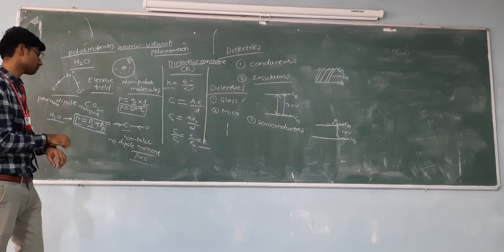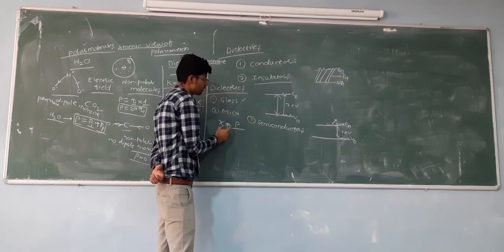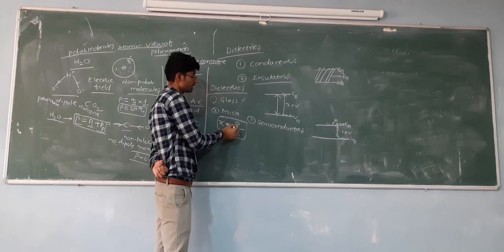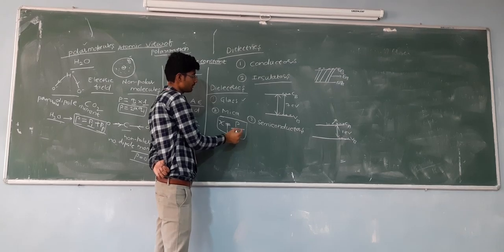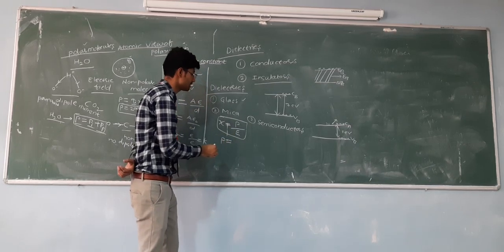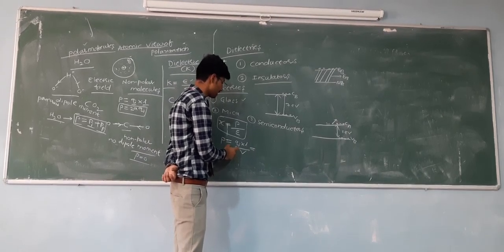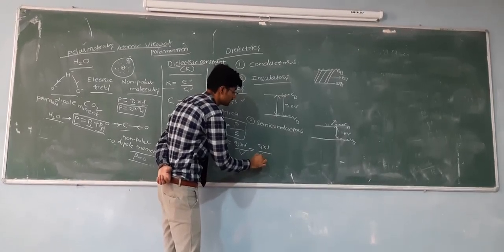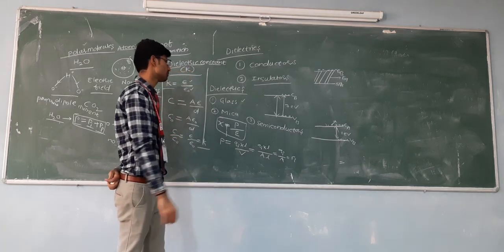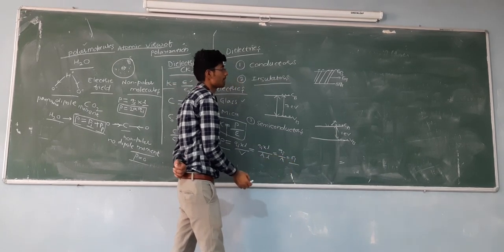Now we will discuss electric susceptibility. Electric susceptibility can be defined as the electric polarization divided by the electric field intensity. Polarization is the induced dipole moment divided by the volume of the dielectric. Writing Q_i × L divided by volume (area × distance), we get Q_i / A, which is equal to the surface charge density. So polarization equals the induced surface charge density.